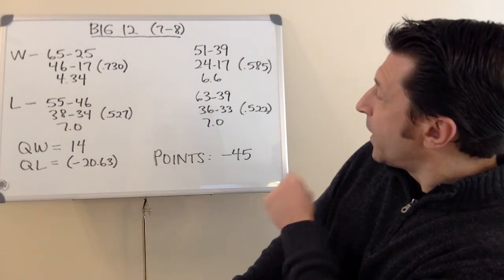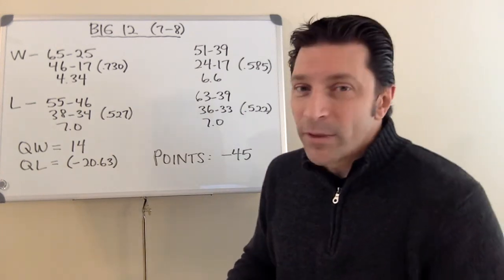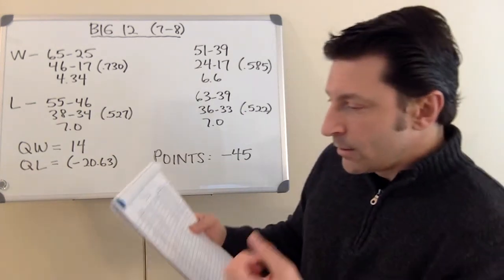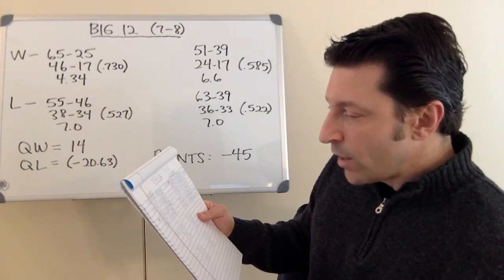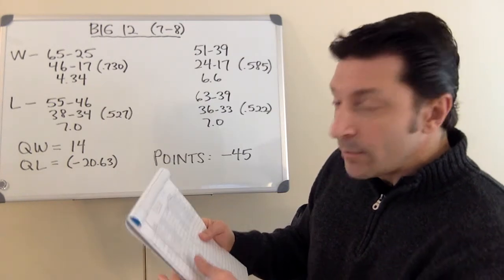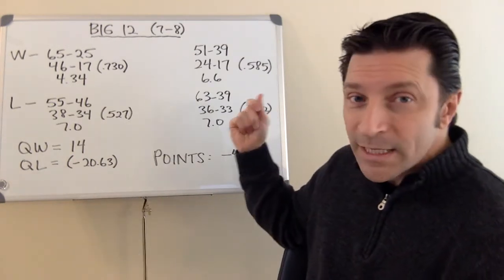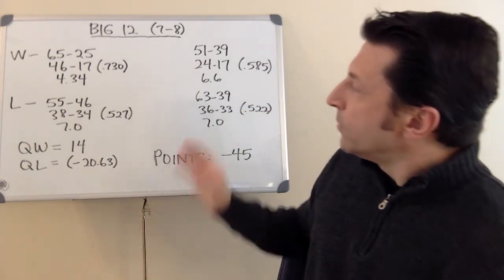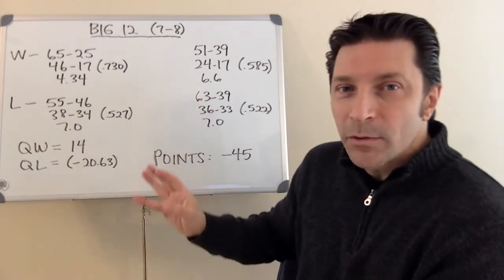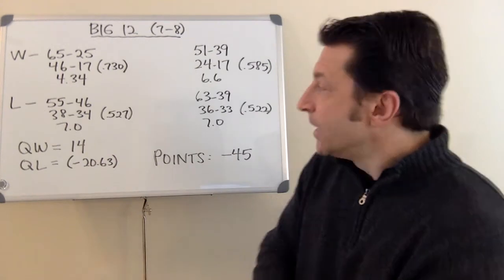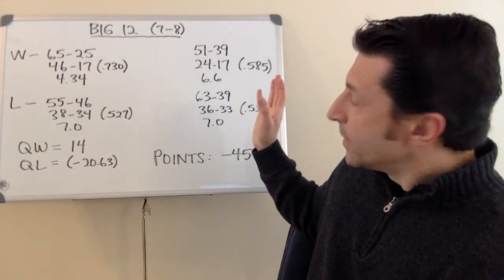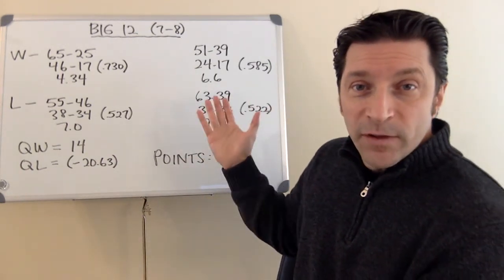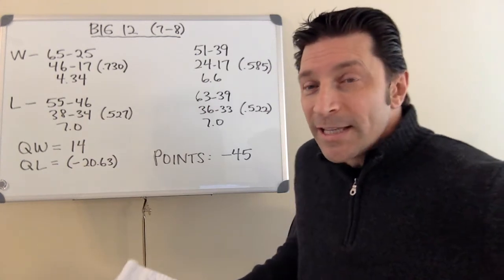So it shows you how good they were against their league versus how good was the competition against their Power Five league. So 46 and 17 for the Big 12 teams that won those 7 games. 24 and 17, a 585 winning percentage for the teams that they beat: Pitt, Colorado, BYU, Missouri, Texas A&M, Notre Dame, and Auburn. They went 24 and 17 in their leagues. So you would expect teams that win 73% in its league to defeat, for the most part, teams that won 58% winning percentage against its league.